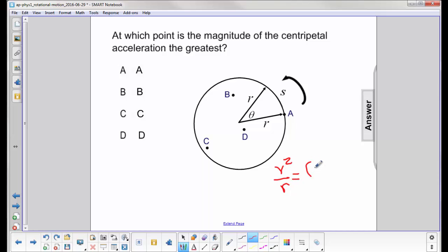v we know is r omega, so we square that and over r. So what we come up with is centripetal acceleration. One of these r's cancels out and we have r omega squared.